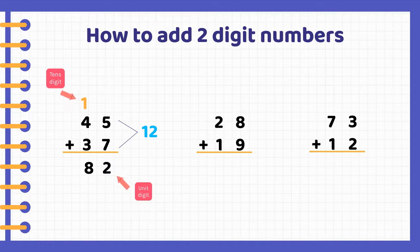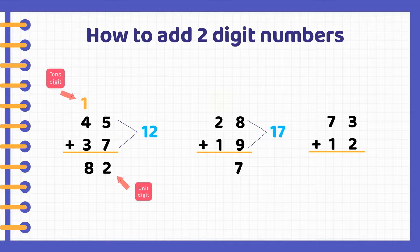For our second example, we would do the same thing. We first have to add 8 plus 9. 8 plus 9 is 17. We keep the 7 and we carry the 1. Now we add 1 plus 2 plus 1, which is 4. Our final answer is 47.